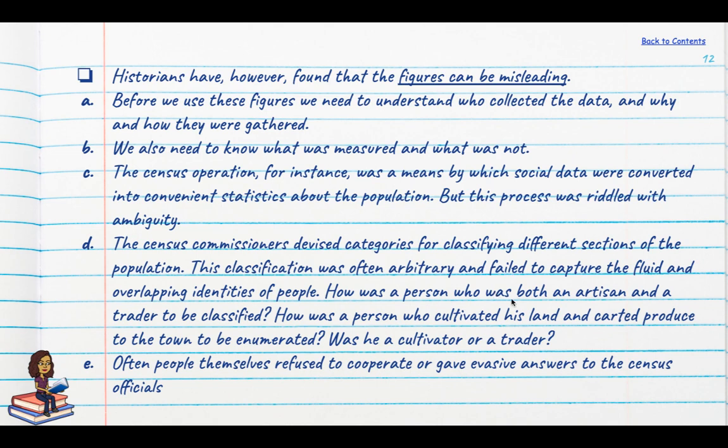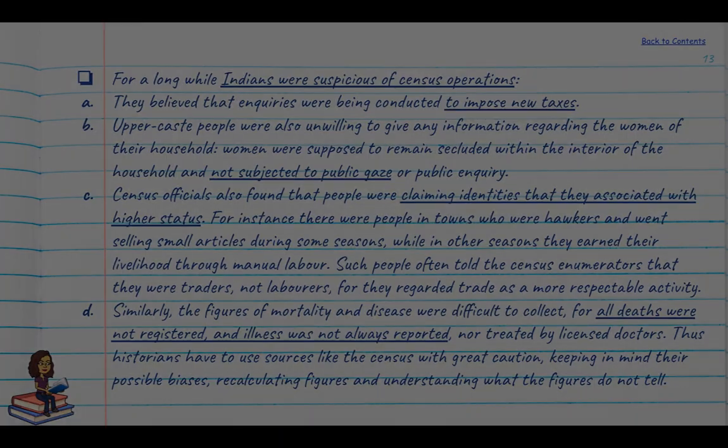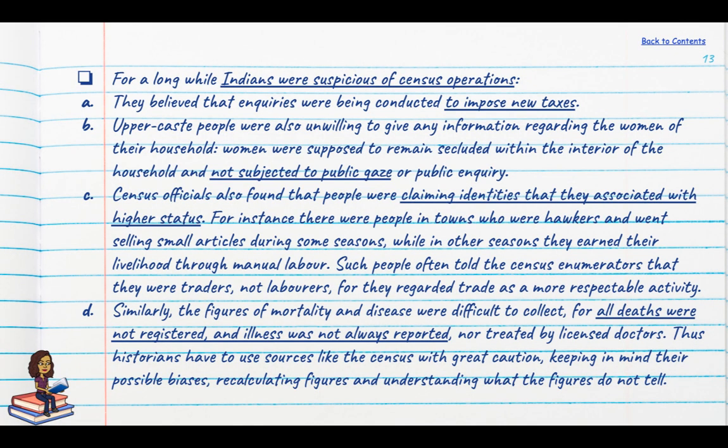For example, how was a person who was both an artisan and a trader to be classified? Or a person who cultivated land and then took crops to the city to sell — was he a cultivator or a grain trader? People themselves also refused to cooperate and gave evasive answers, and for a long while, Indians were very suspicious of census operations.